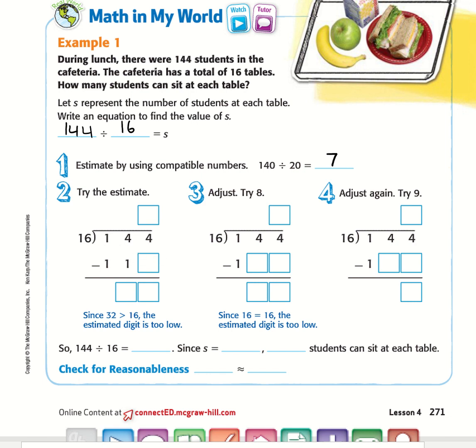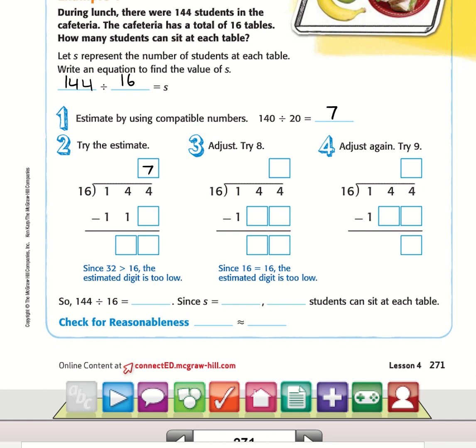16 goes into 144, we don't really know how many times, so we're going to use the estimate of 7. Divide, multiply, subtract, bring down, repeat. 7 times 16, that's going to be 42, 112.